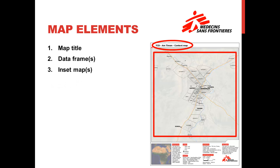3. Inset map or maps. Inset maps are most often used to indicate the mapped area's location either in a region, on a continent, or in the world. The map on the right's inset map indicates Amtiman's location in the centre of Africa.